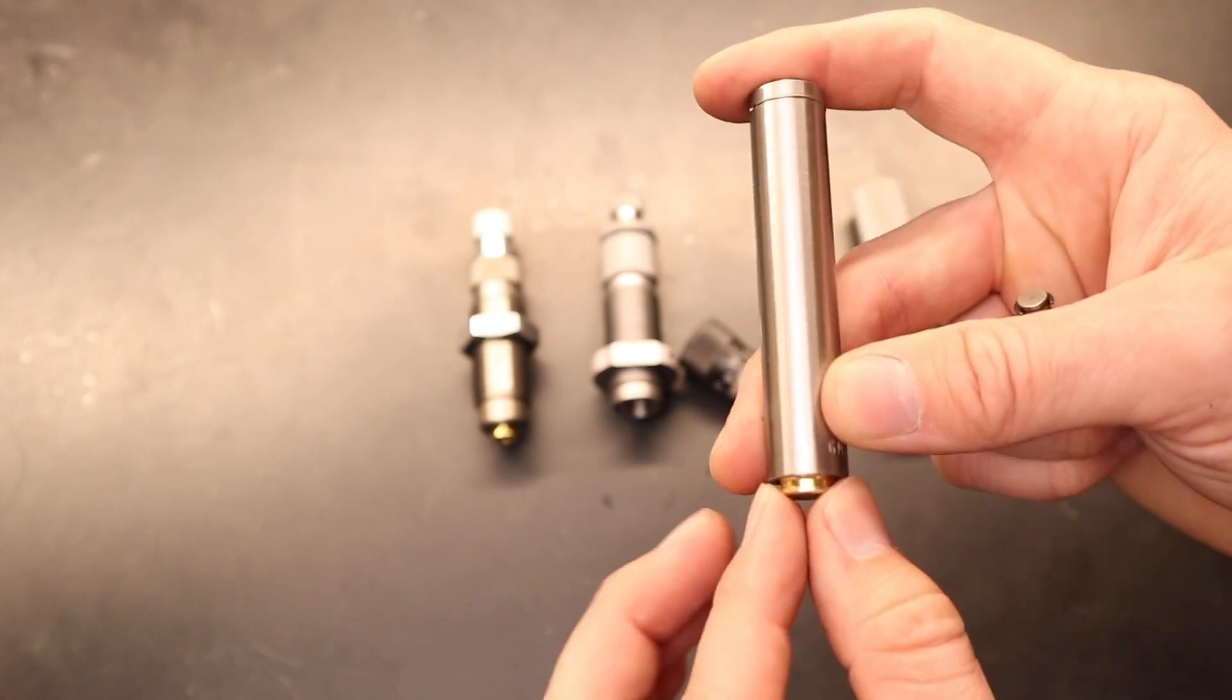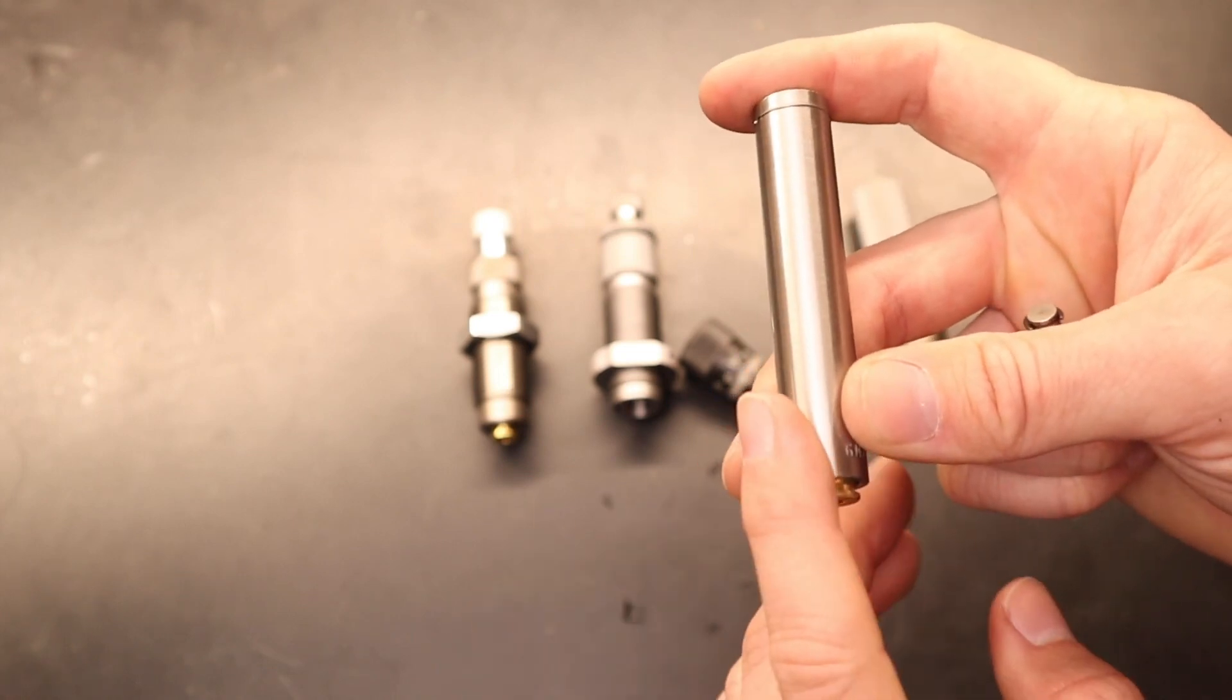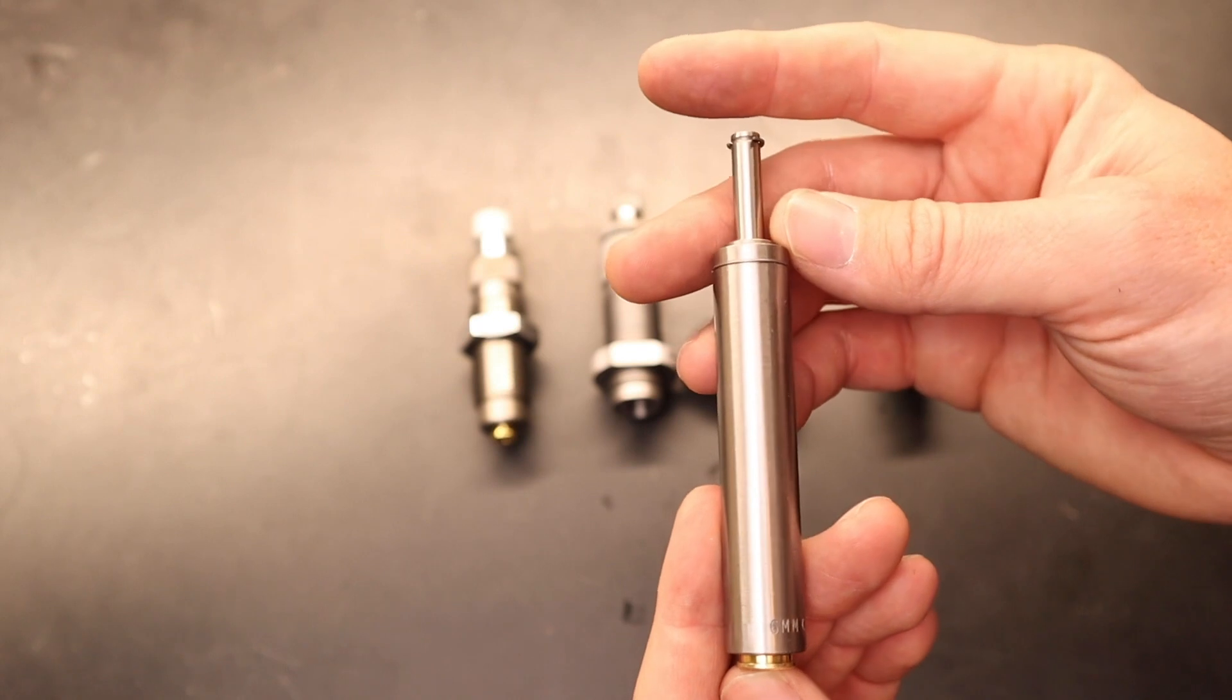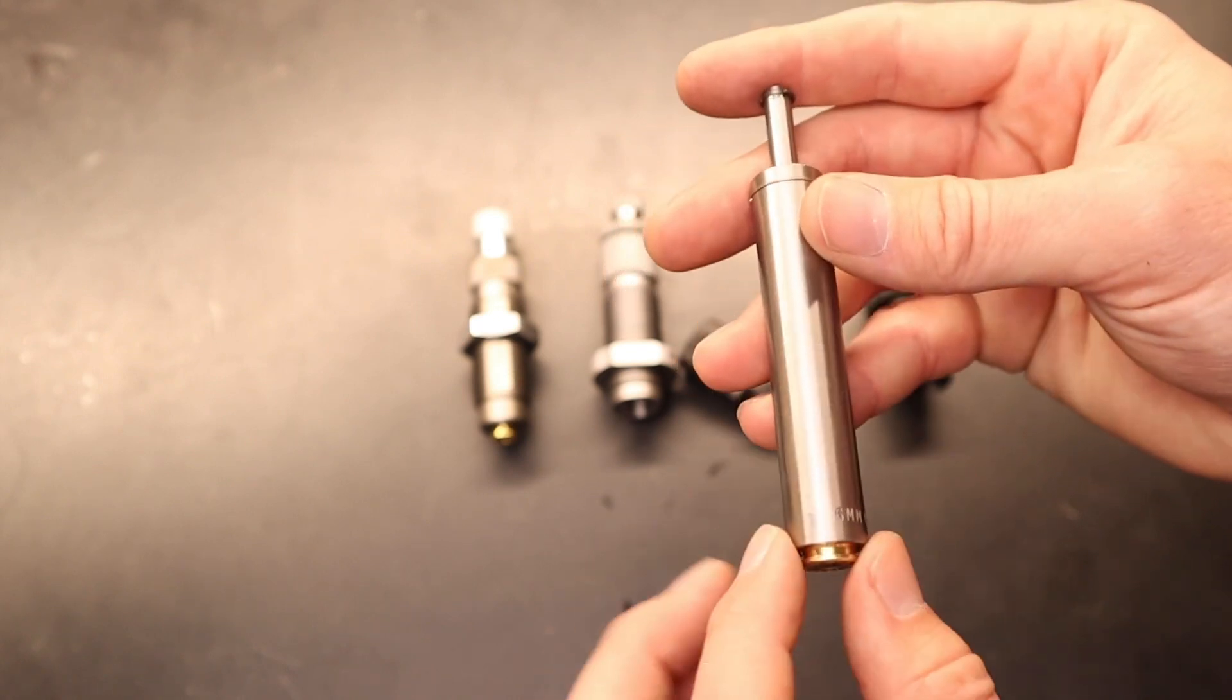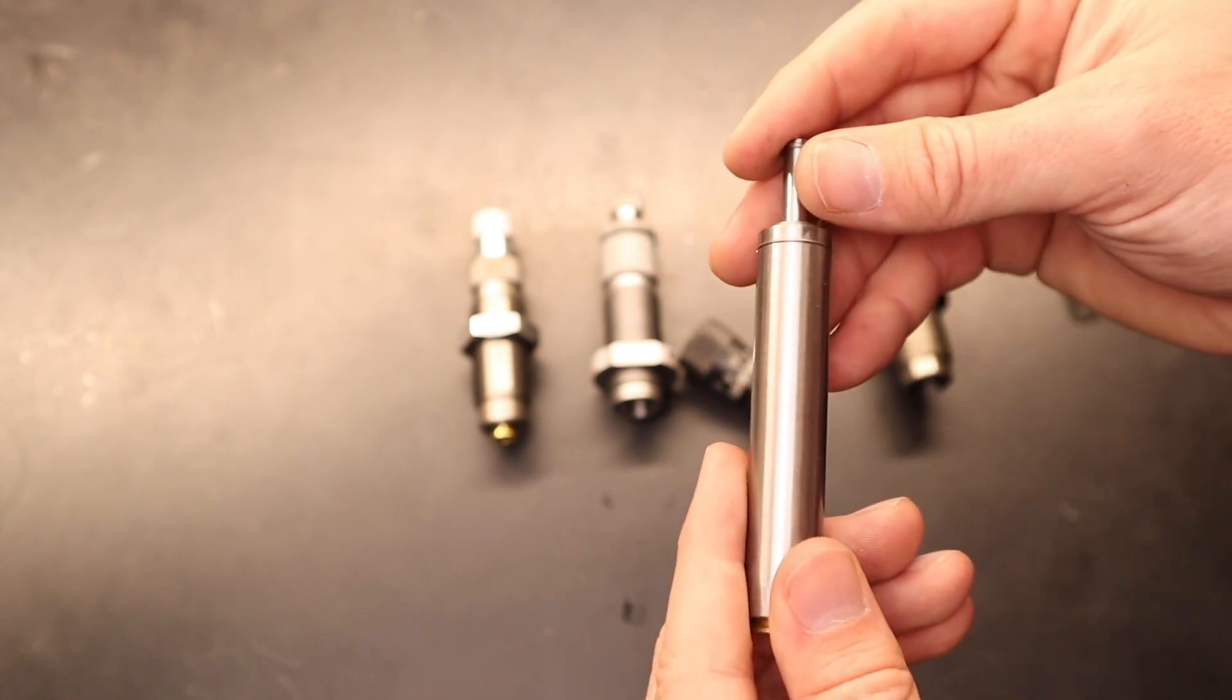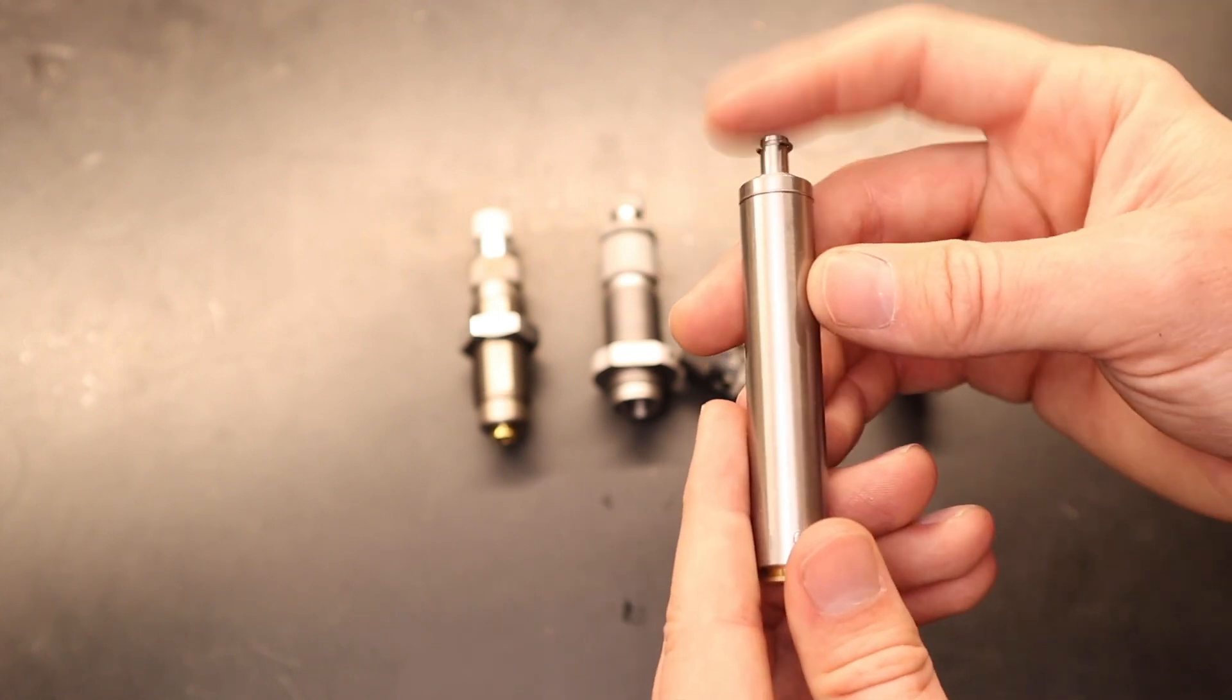That's going to hold everything perfectly centered where you want it down here. And then when your press reaches the top of the stroke, that's when it starts to actually seat the bullet. So your brass is held in place before the bullet really starts getting seated down into where it's going to go.